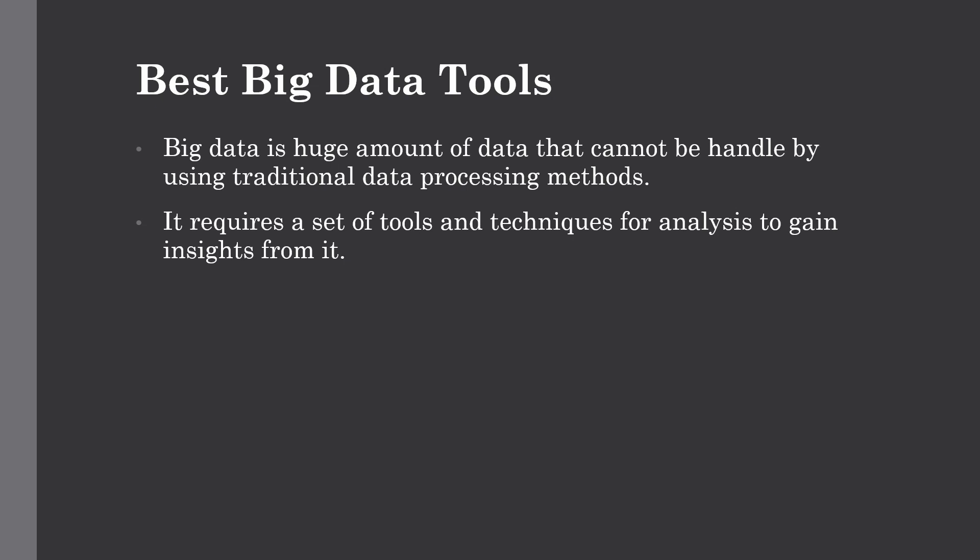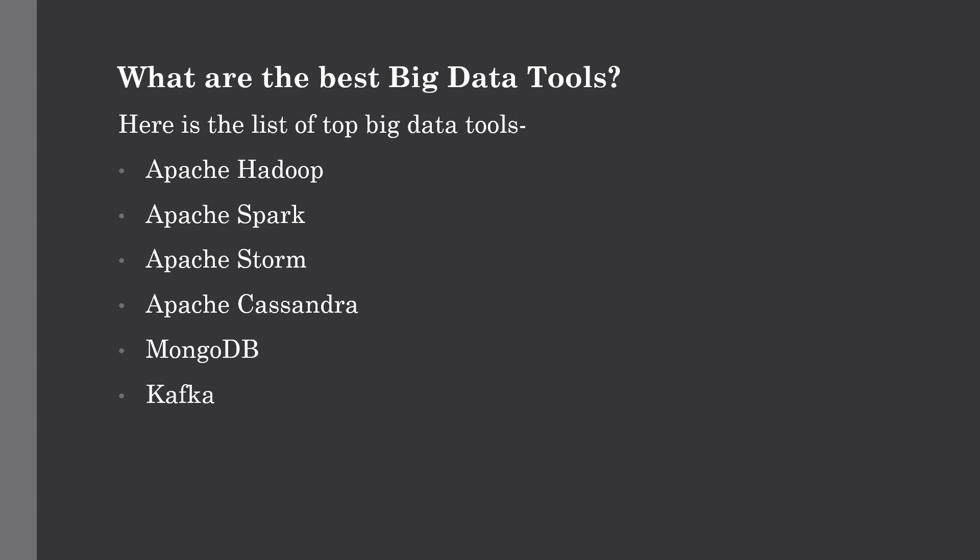There are a number of big data tools available in the market right now. The most familiar is Hadoop, which helps in storing and processing large data. We also have Spark, which is really popular and helps in in-memory calculation. We also have Storm which helps in faster processing, Apache Cassandra, MongoDB, and so on. Here is the list of top six big data tools: Apache Hadoop, Spark, Storm, Cassandra, MongoDB, and Kafka.